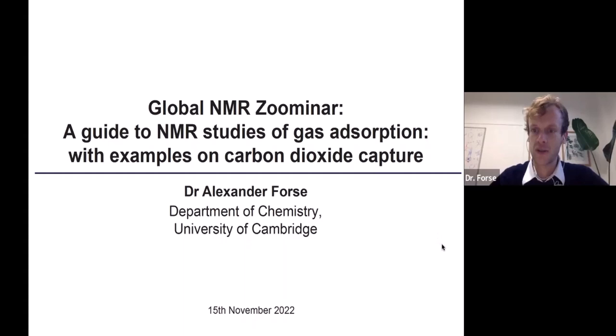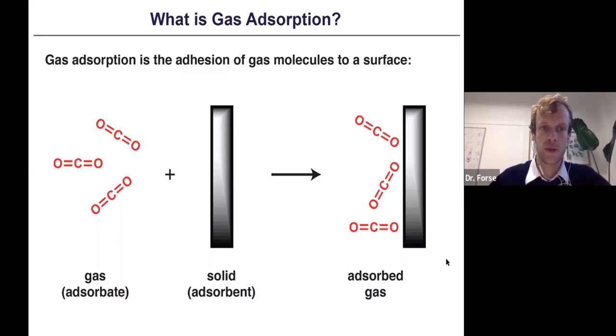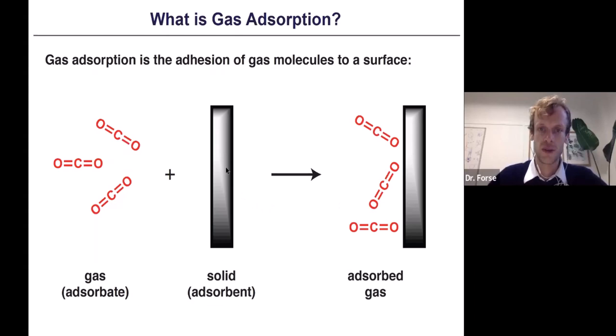To start, I'll introduce the concept of adsorption and specifically gas adsorption. Gas adsorption is the process where gas molecules adhere to a surface — for example, CO2 gas adhering to a solid surface. We refer to the solid material doing the adsorption as the adsorbent. The gas that binds to the surface we call the adsorbate, or adsorbed gas.